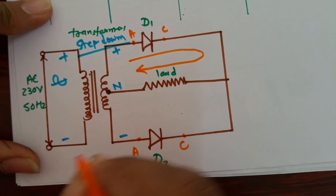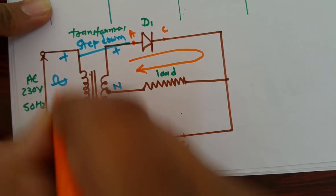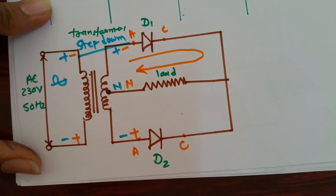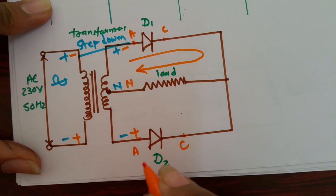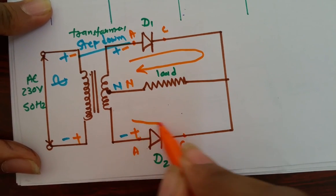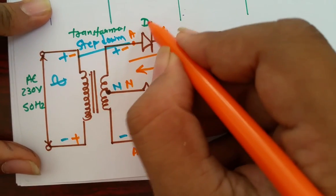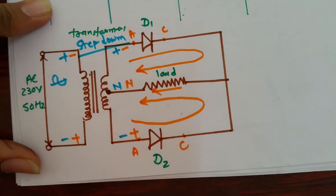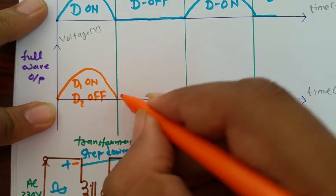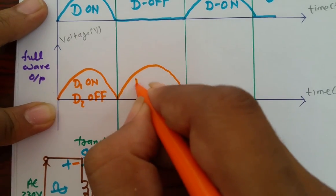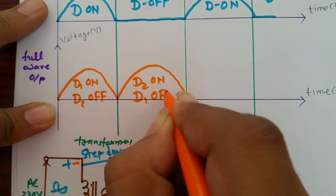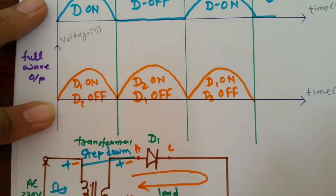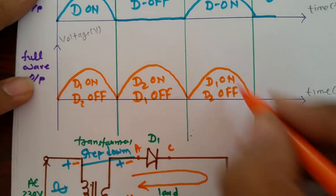During the negative half cycle, the bottom terminal is positive with respect to the top terminal. At that time, the anode of diode D2 is positive with respect to the cathode, resulting in D2 turning on and current flowing in this loop. Meanwhile, the anode of D1 is negative with respect to cathode, so D1 is off. Importantly, the current direction through the load is in the same direction as it was during the positive half cycle. This gives us a full wave output — D2 is on, D1 is off — and this gets repeated continuously, achieving full wave conversion at the output.